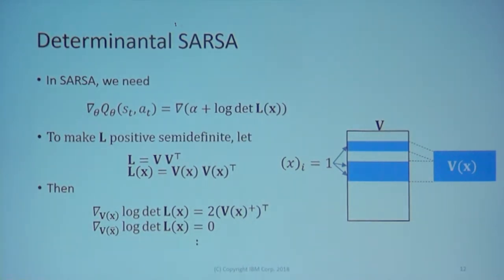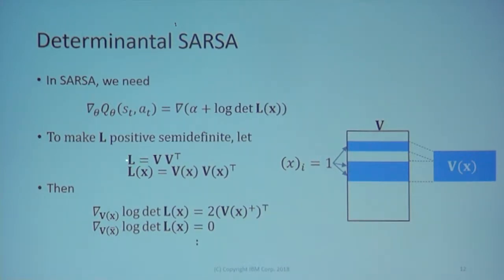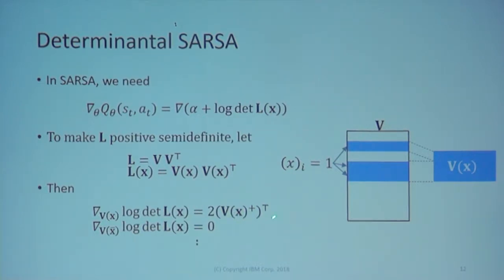In the proposed Determinant-SARSA algorithm, we need to compute the gradient of the Q-function — specifically the gradient of the log-determinant of the matrix. To ensure L remains positive semi-definite, we express L as V times V-transpose. Then L_X becomes V_X times V_X-transpose, where V_X is the submatrix of V consisting of rows indexed by elements that are one in X. The gradient of the log-determinant of L_X with respect to V_X is just a submatrix of V_X-transpose times two, and other gradients can be derived in a straightforward manner.